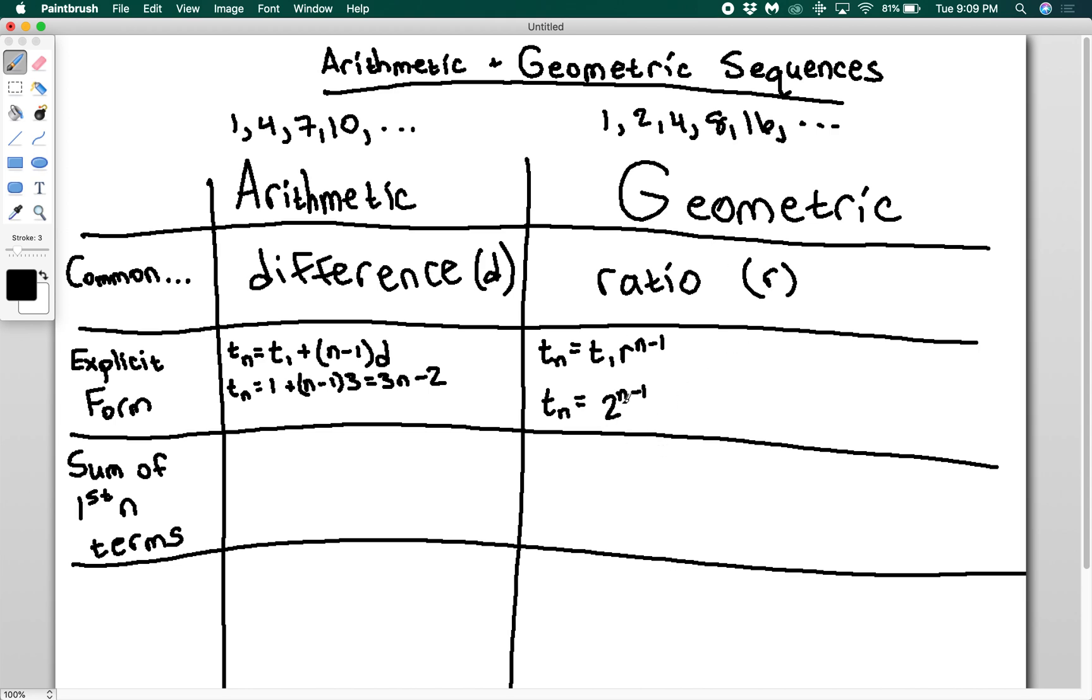So we can check this. Term 1, I'm going to do 1 minus 1 is 0, 2 to the 0 is 1. Then the second term, I'm going to plug in 2. 2 minus 1 is 1, 2 to the 1 is 2. Third term, 3 minus 1 is 2, 2 squared is 4, and so on. So this generates the explicit form, the explicit equation of your sequence.